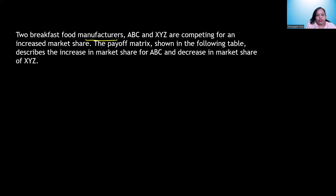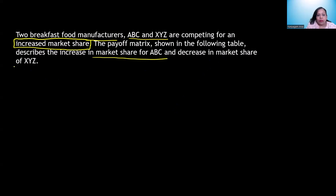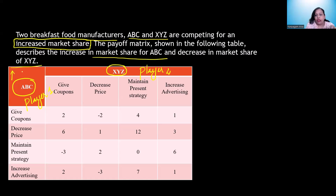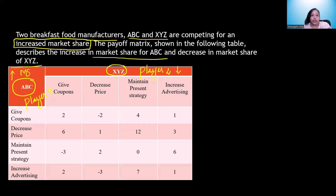There are two food manufacturers called ABC and XYZ. They are competing for an increased market share. The payoff matrix describes the increase in market share for ABC and decrease in market share of XYZ. We have company ABC as player 1 and company XYZ as player 2. ABC is in a better position where any strategy they employ will increase their market share, whereas any strategy XYZ employs will decrease their market share.